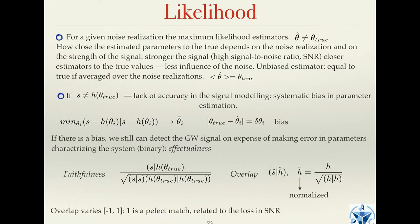One more point: what we use is not the true gravitational wave signal, it is a model, so it has some inaccuracy. How big or how small is a big question. Our model of the gravitational wave signal is not necessarily the true signal. Even numerical relativity waveforms have some intrinsic error due to numerical methods — it's the best we can get, but not necessarily true.